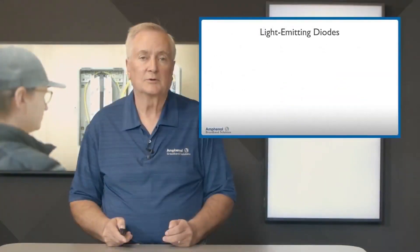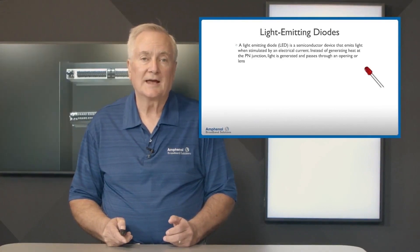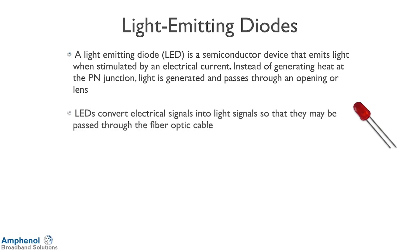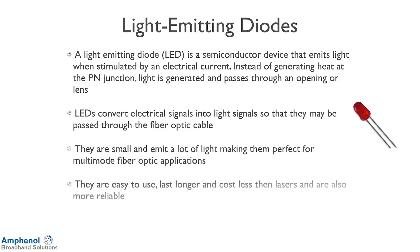A light-emitting diode, referred to as an LED, is a semiconductor device that emits light when stimulated by an electric circuit. Instead of generating heat at the P and N junction — which stands for positive and negative — light is generated and passes through an opening or lens. LEDs convert electrical signal into light signals so they may be passed onto the fiber optic cable. They're small, emit a lot of light, and are perfect for multi-mode applications. They're easy to use, last longer, cost less, and are more reliable.